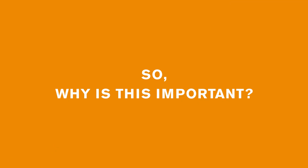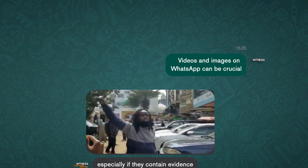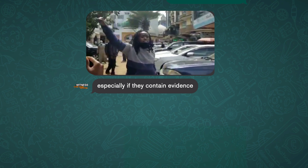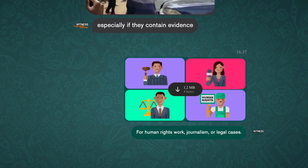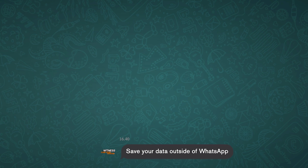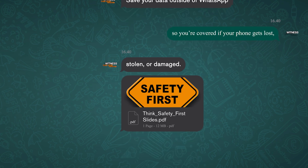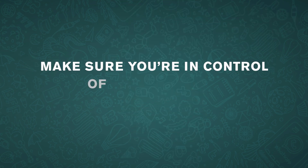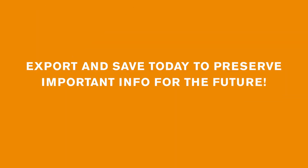So, why is this important? Videos and images on WhatsApp can be crucial, especially if they contain evidence for human rights work, journalism or legal cases. And hey, accidents happen! Save your data outside of WhatsApp so you're covered if your phone gets lost, stolen or damaged. Make sure you're in control of your content. Export and save today to preserve important info for the future.